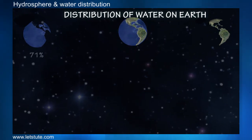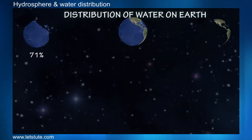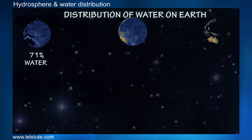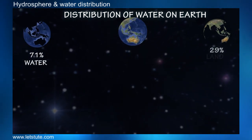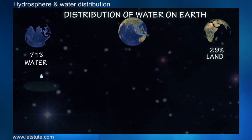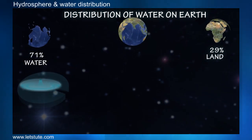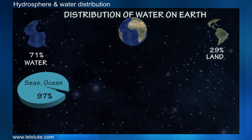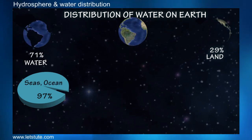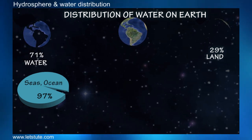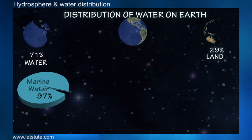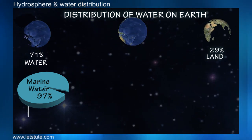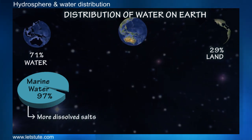Now if we look at the distribution of water in different forms on our Earth: 71% of our Earth is covered with water and the remaining 29% is land. Around 97% of this water is found in seas and oceans.